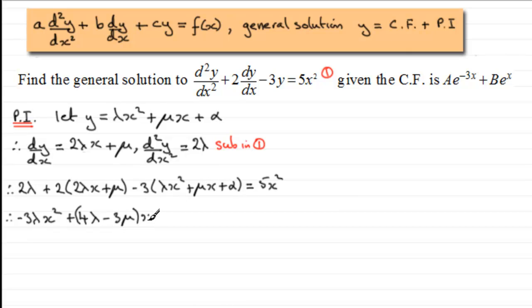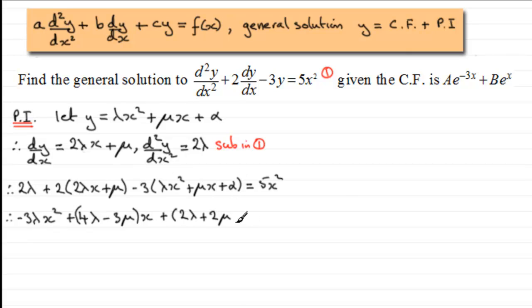For the constant terms, we have 2λ + 2μ − 3α. So the full expanded equation is: −3λx² + (4λ − 3μ)x + (2λ + 2μ − 3α) = 5x².